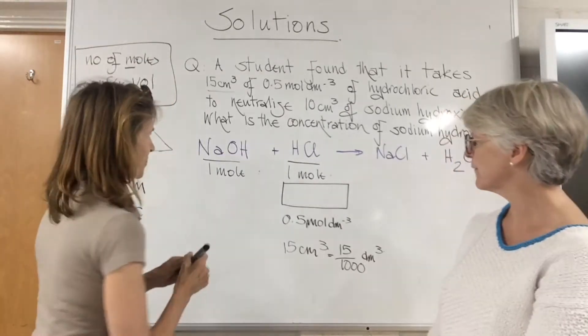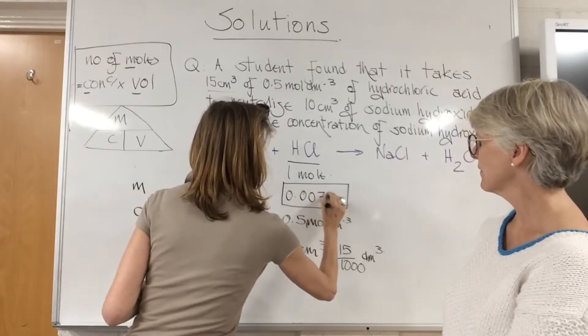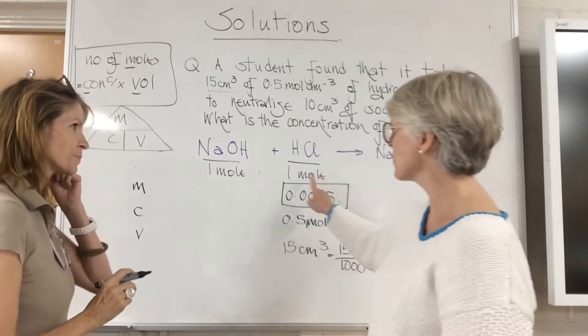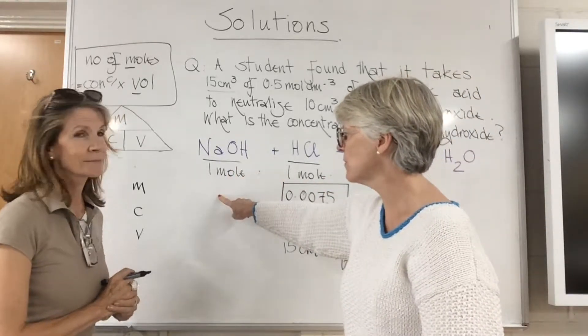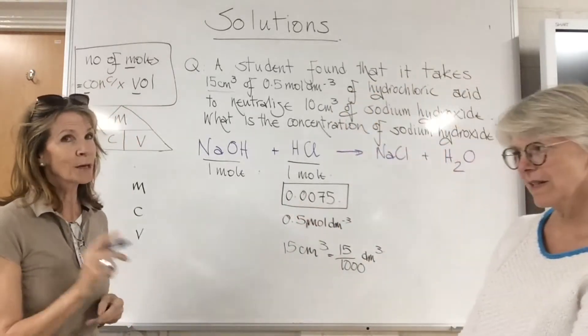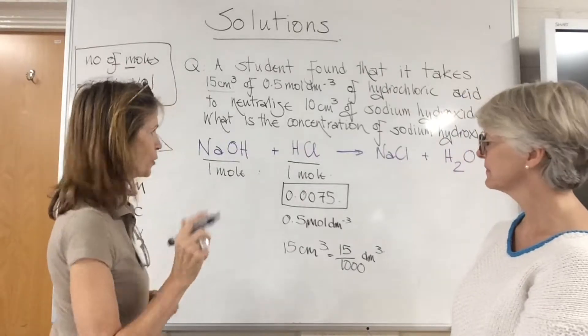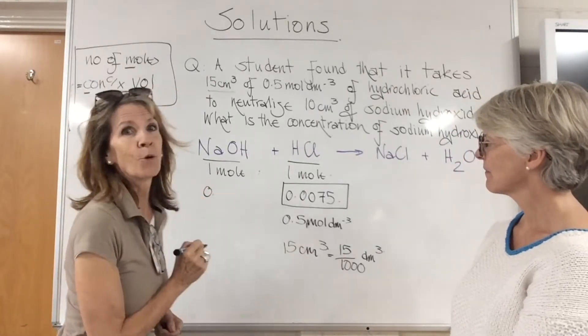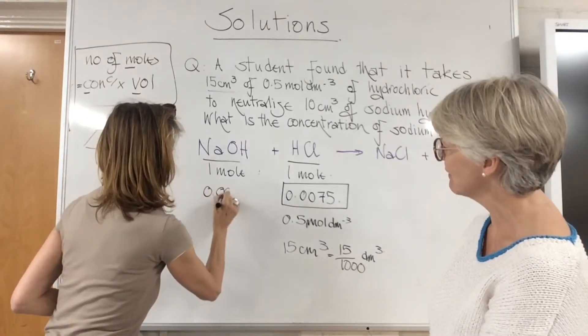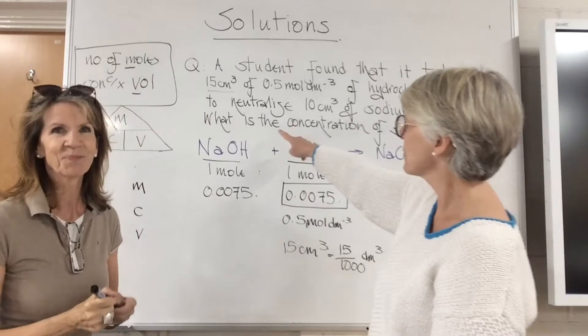If you could fill that in the hydrochloric acid box. Now because we know the ratio is one to one, how many moles of sodium hydroxide would be required to neutralize that? I think it's 0.0075. Excellent, absolutely excellent, because it's the same number of moles.